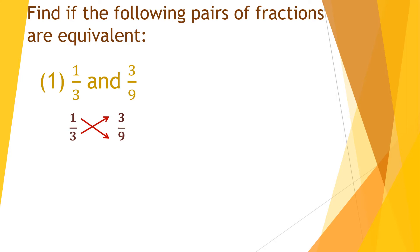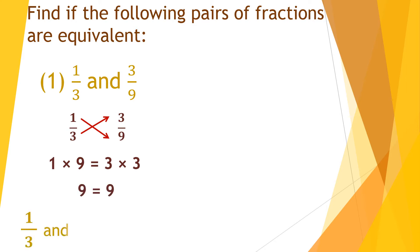That means 1 multiplied by 9 is equal to 3 multiplied by 3. Do the multiplication: 1 × 9 = 9 and 3 × 3 = 9. So 9 is equal to 9. Therefore we can say that 1 upon 3 and 3 upon 9 are equivalent fractions.